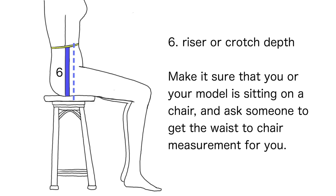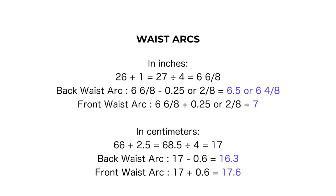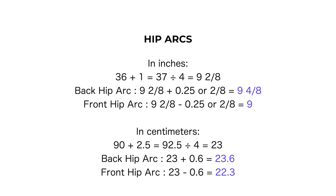Next, let's calculate the waist and hip arcs. For the waist, I added one inch for movement allowance and divided the sum by four to get the quotient. For the back waist arc, I subtract 0.25 inches (2/8 of an inch); that difference is the back waist arc. For the front waist arc, I add 0.25 inches (2/8 of an inch); that sum is the front waist arc. Please pause the video for the centimeter conversion and use your own measurements.